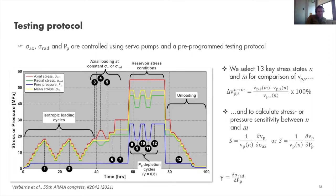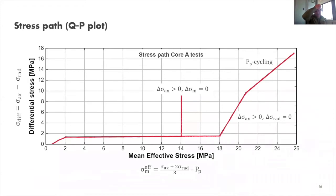In the data analysis, we select 13 key stress states designated N and M for comparison of P- and S-wave velocity, and we calculate the stress or pressure sensitivity between these test states. For example, to evaluate the effect of isotropic stress cycling on acoustic velocity, we look at the difference between stress states 3 and 1, and so on.